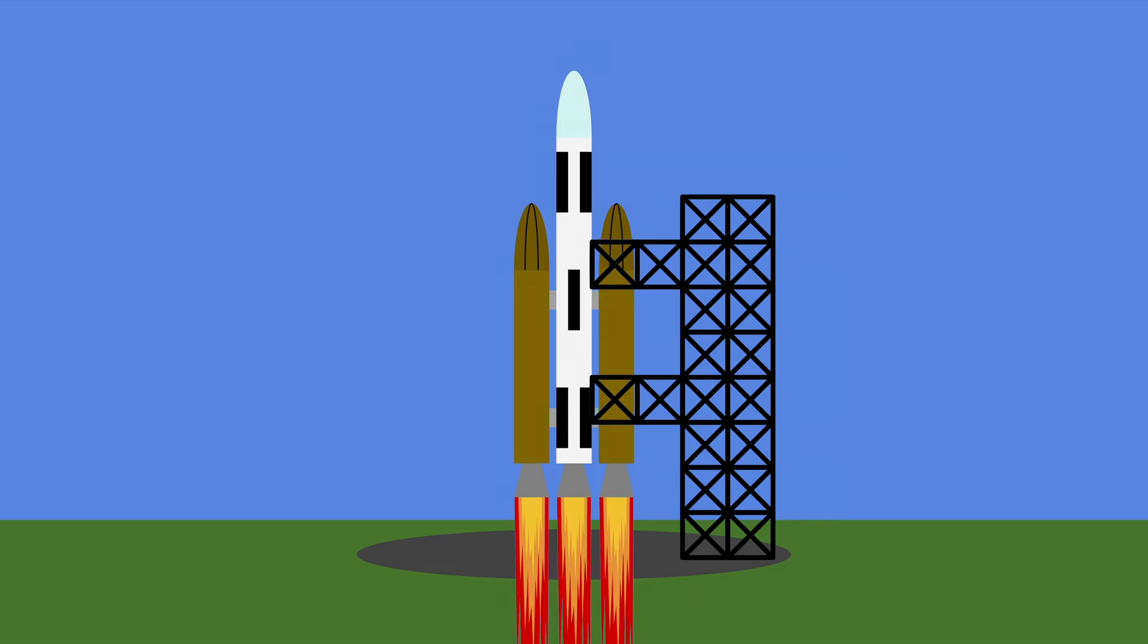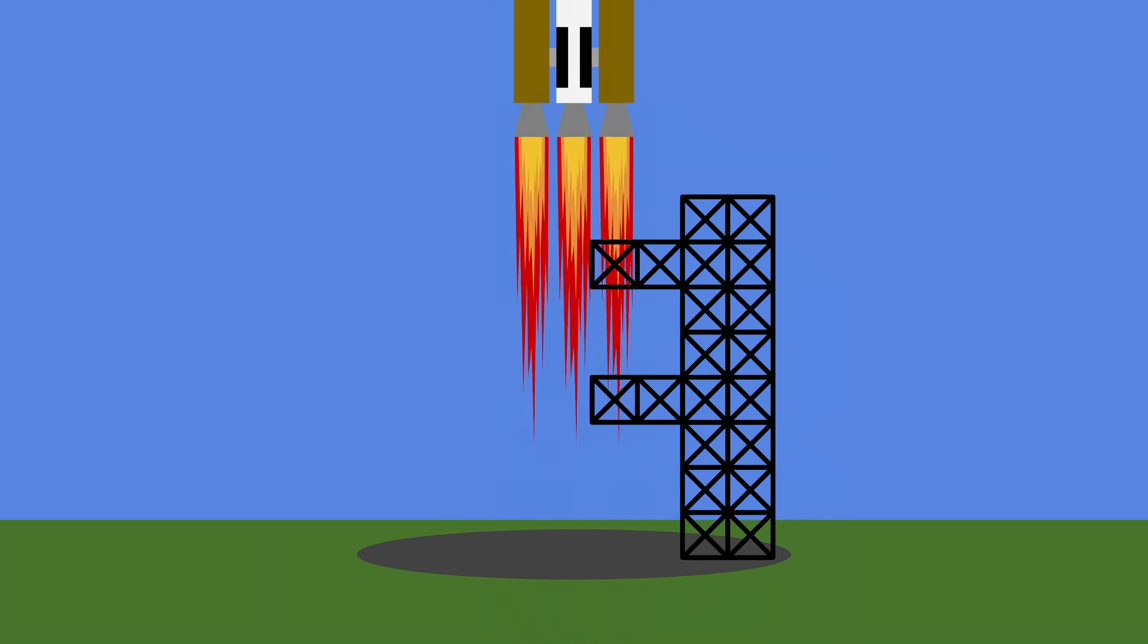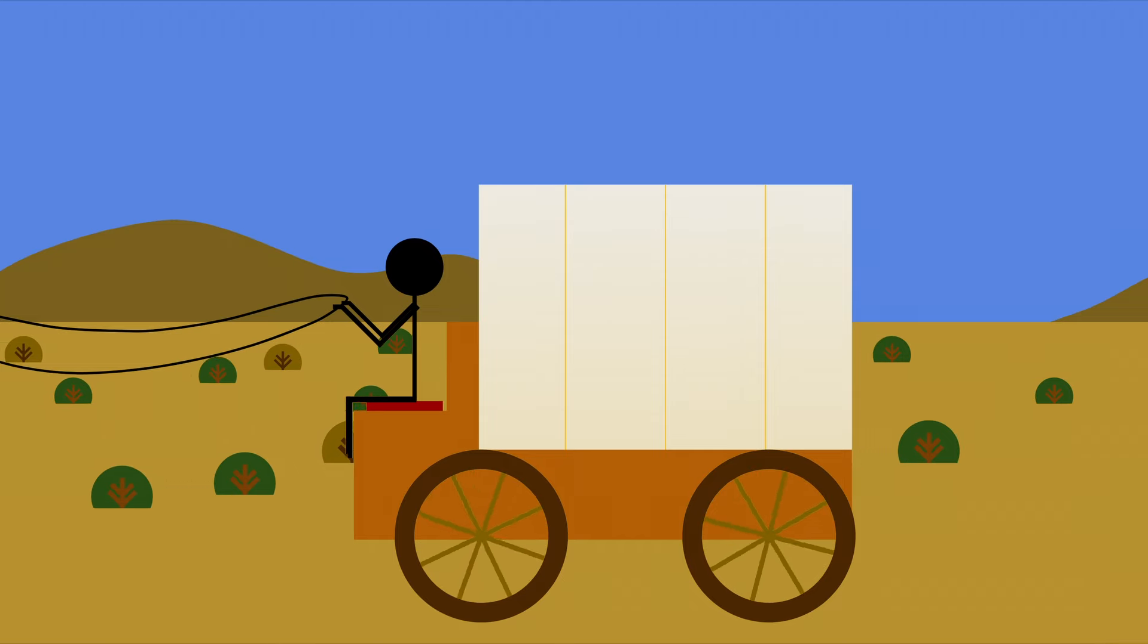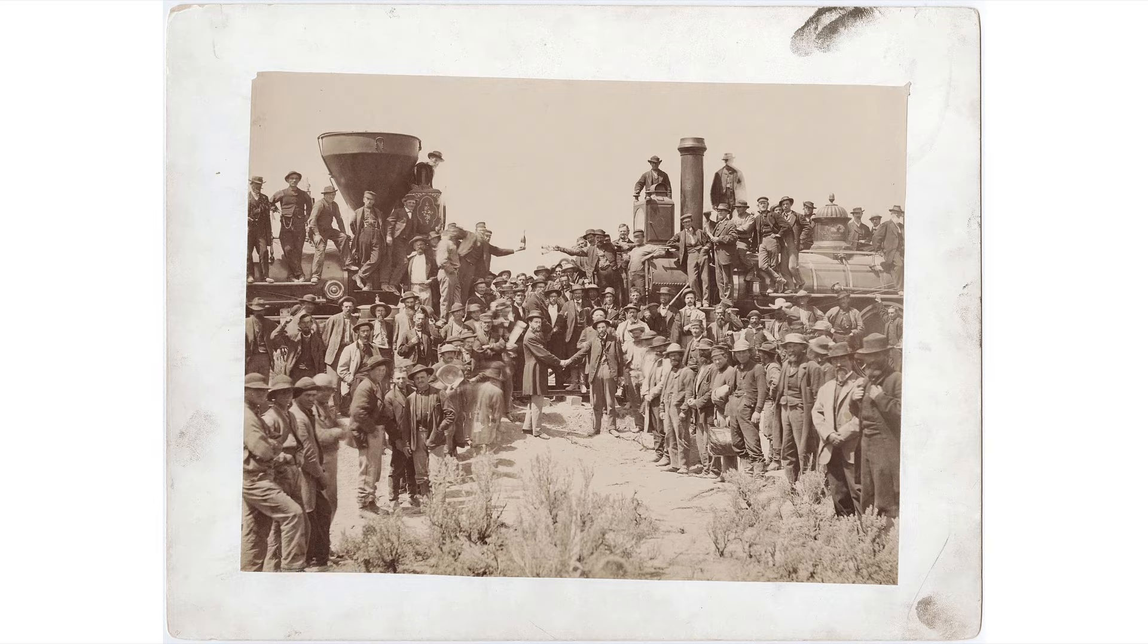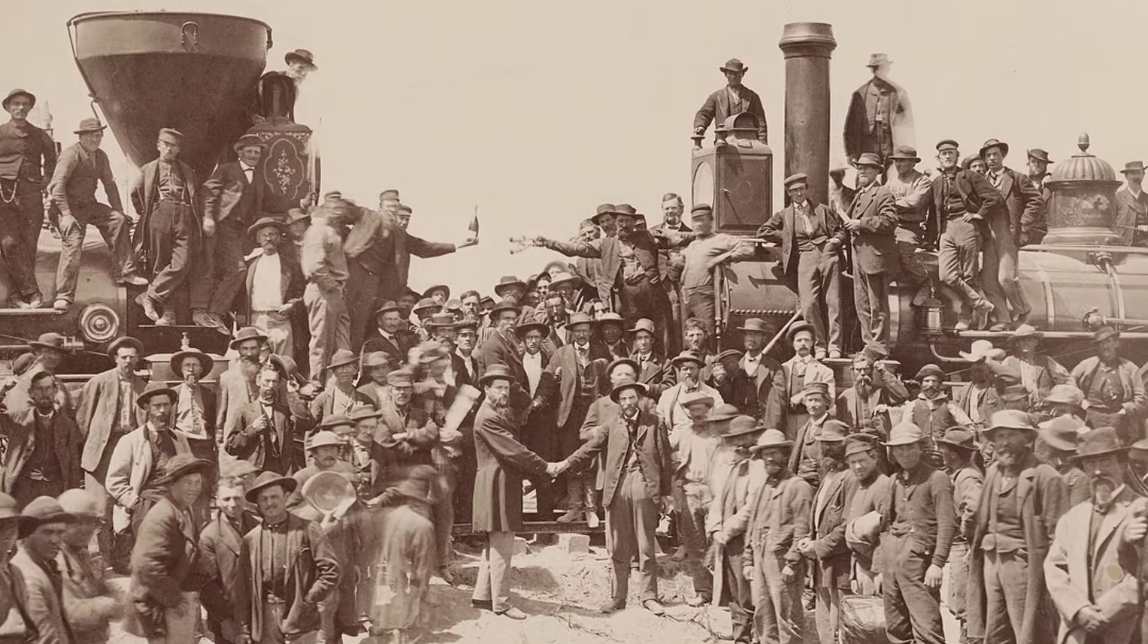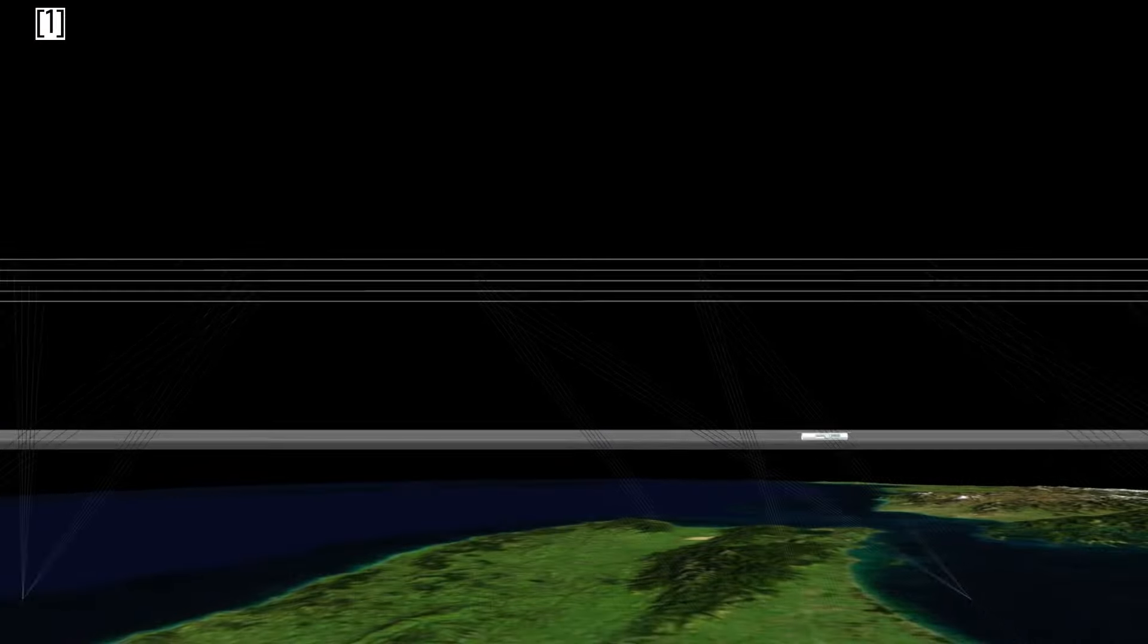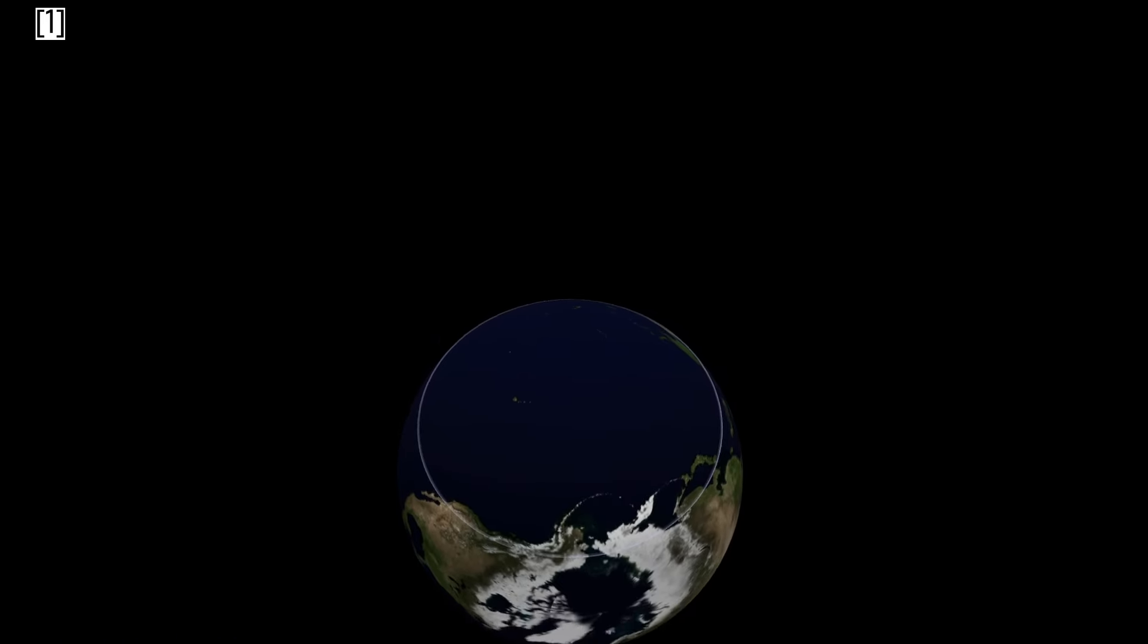Journeys into space are long and arduous, much like traveling across America used to be in the mid-1800s. Back then, this problem was solved by building infrastructure, like the Transcontinental Railroad. Today, we might solve a similar problem by building a tethered ring, a true superhighway to the stars.